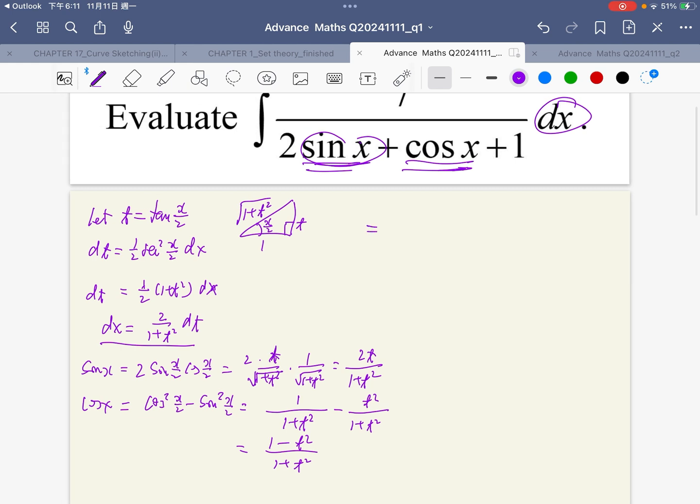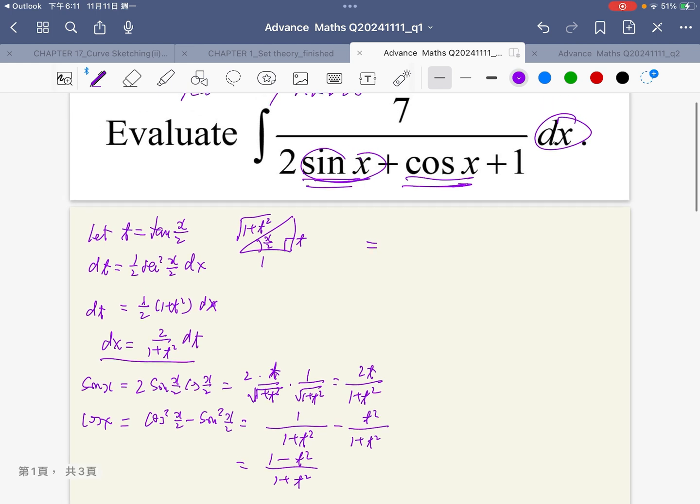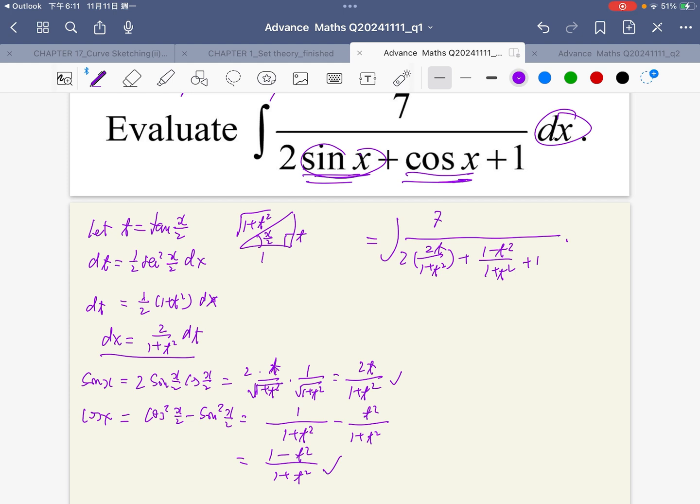Now, finally, I can substitute everything. There is 7 in the numerator, sin x here in the denominator, cos x here, plus 1, and then dx here.